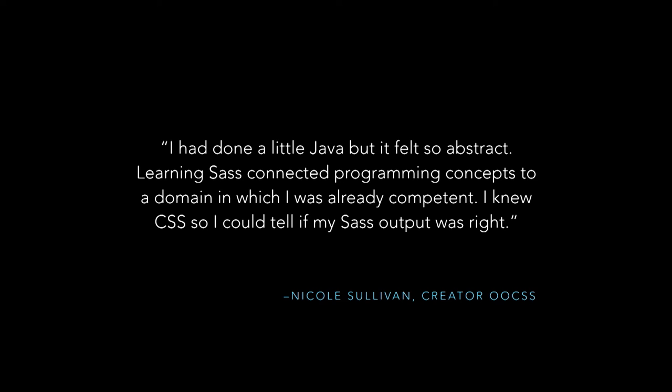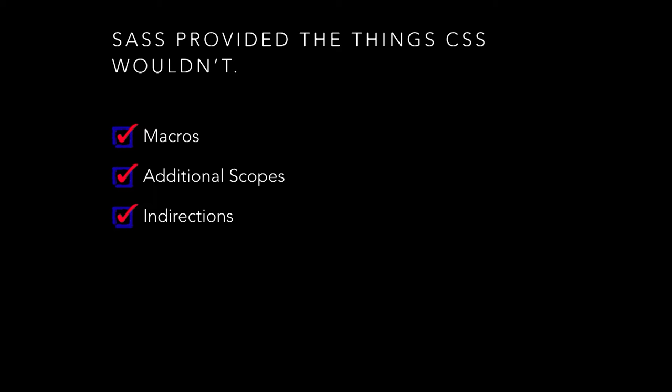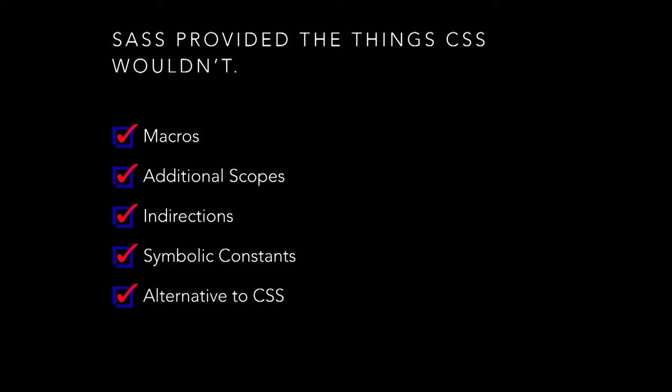One of the things we did really well with Sass is that we actually brought Sass closer to the rest of what we're doing — and we did that by adding programming concepts to CSS. Nicole Sullivan, who created OOCSS, told me she had done a little Java programming before she got into CSS development, but it felt really abstract to her. When she got around to learning Sass, that connected the programming concepts she had learned through Sass and through college, bringing them into a domain in which she was already competent. She was then able to take what she knew about Sass and CSS, check the outputs, make sure everything was working right, and later go on to learn JavaScript and transfer that knowledge.